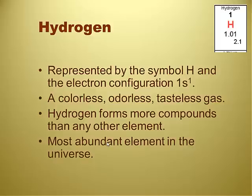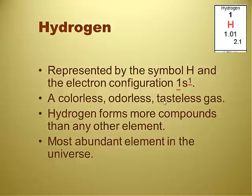Hydrogen is represented by the symbol H with electron configuration 1S1 — that's a preview of energy levels we'll learn about later. The first energy level with one electron. Hydrogen is colorless, odorless, and tasteless. It forms compounds with more elements than any other element, and that's probably because it's the most abundant element in the universe. In its elemental form, it is a colorless, odorless, tasteless gas.